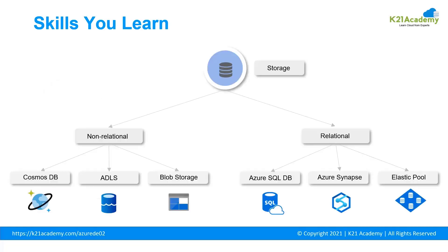When we talk about storage, Microsoft provides different types of storage in Azure — non-relational and relational. For non-relational storage, we have Azure Cosmos DB (a NoSQL data store), Azure Data Lake Store (a hyperscale repository for big data analytics and Hadoop distributed file system for the cloud), and Blob Storage, which stores unstructured data cheaply and supports hot and cool data tiers. For relational storage, we have Azure SQL Database for structured data, Azure Synapse as a data warehouse, and an elastic pool — a collection of databases sharing resources managed through a SQL database server.